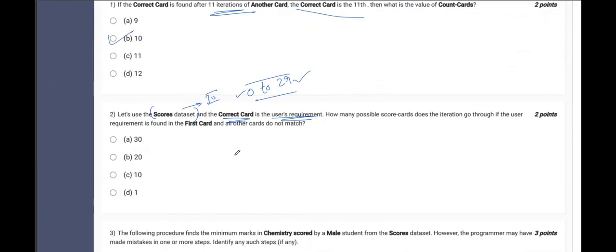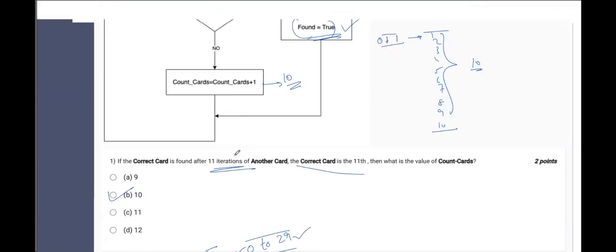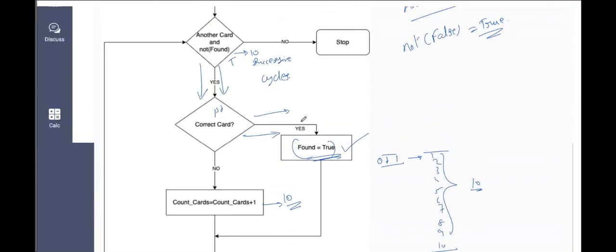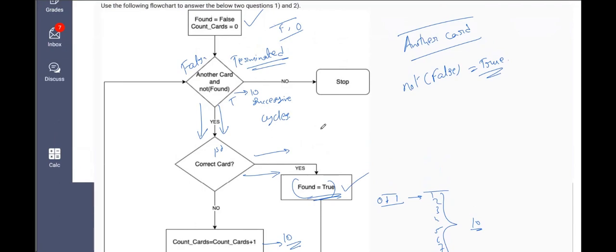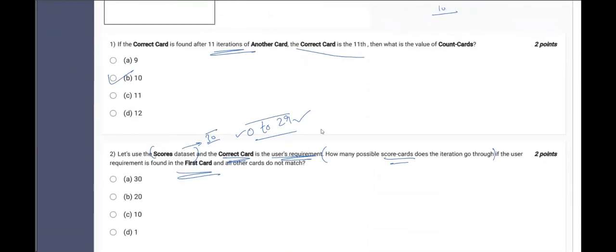Here in the question, if you see, they're asking us, how many possible score cards does the iteration go through if the user requirement is found in the first card itself? If you see, as I said to you, not of true is false. Therefore, this stops here itself. So the complete process is terminated. When did this process get terminated? The flowchart gets terminated after visiting only one card, which is the first card. Therefore, the second answer will be option D, which is one.